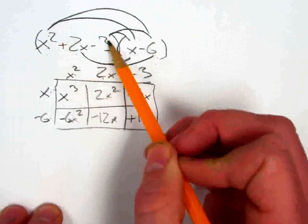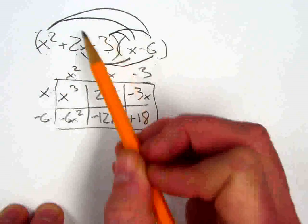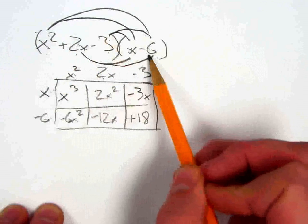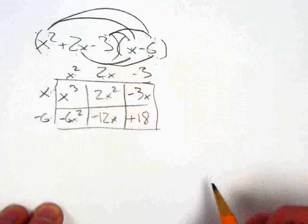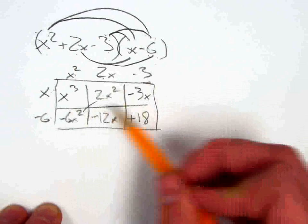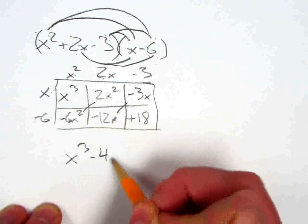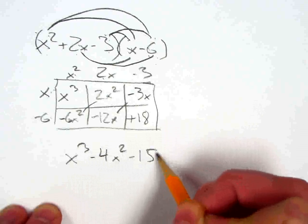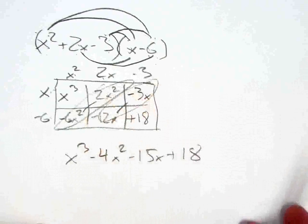I've taken the x squared and distributed it into everything in the other parenthesis. Then I took my 2x and distributed it into everything in the other parenthesis. Then I took my negative 3 and distributed it into everything in the other parenthesis. From there, we're just combining like terms. x cubed minus 4x squared minus 15x plus 18 after I combine the like terms that are diagonal of each other.